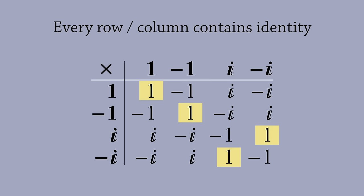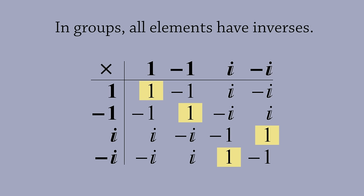Next, every row and every column contains the identity element. Why is this the case? This is because in a group, every element has an inverse. In this group, the inverse of i is negative i, because their product is 1.